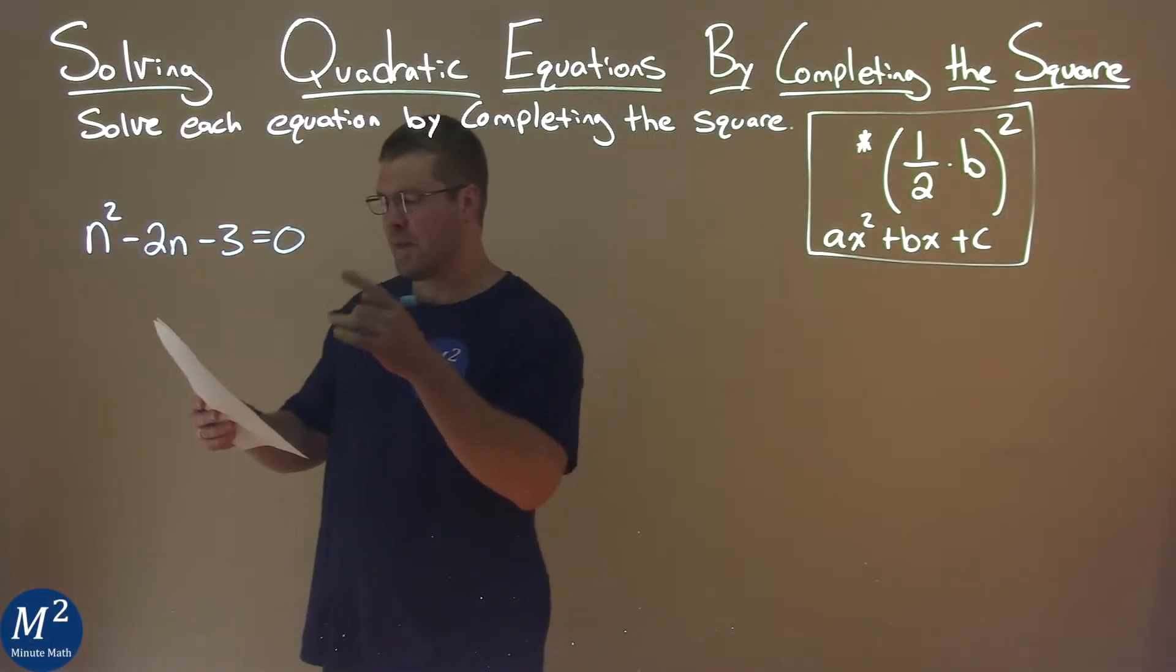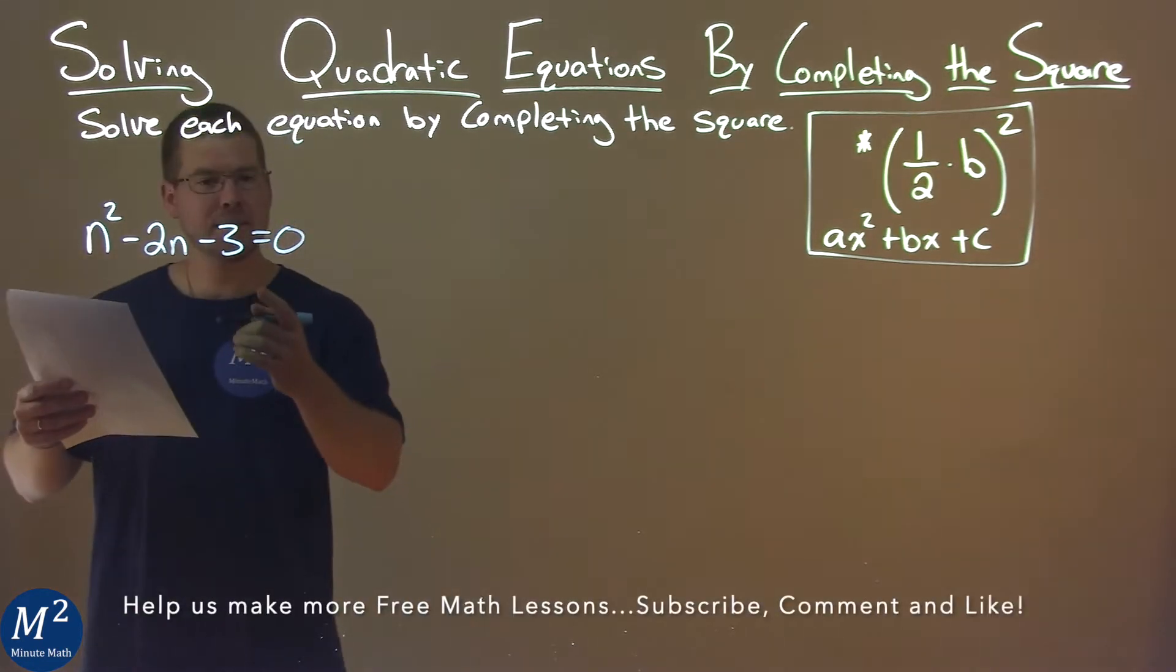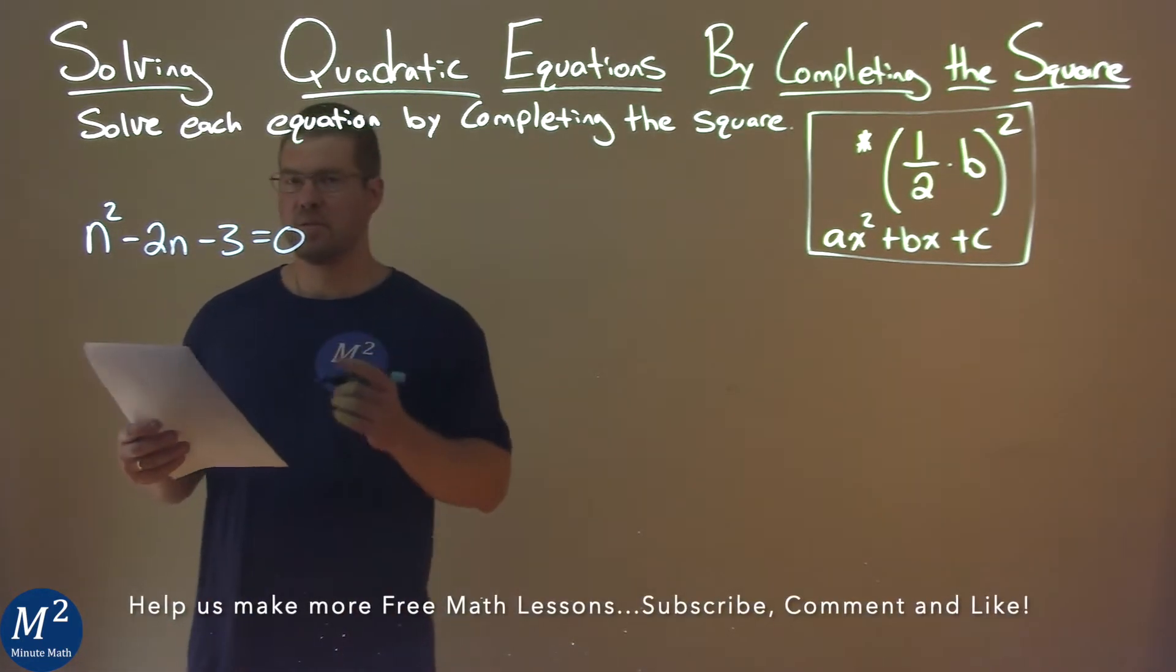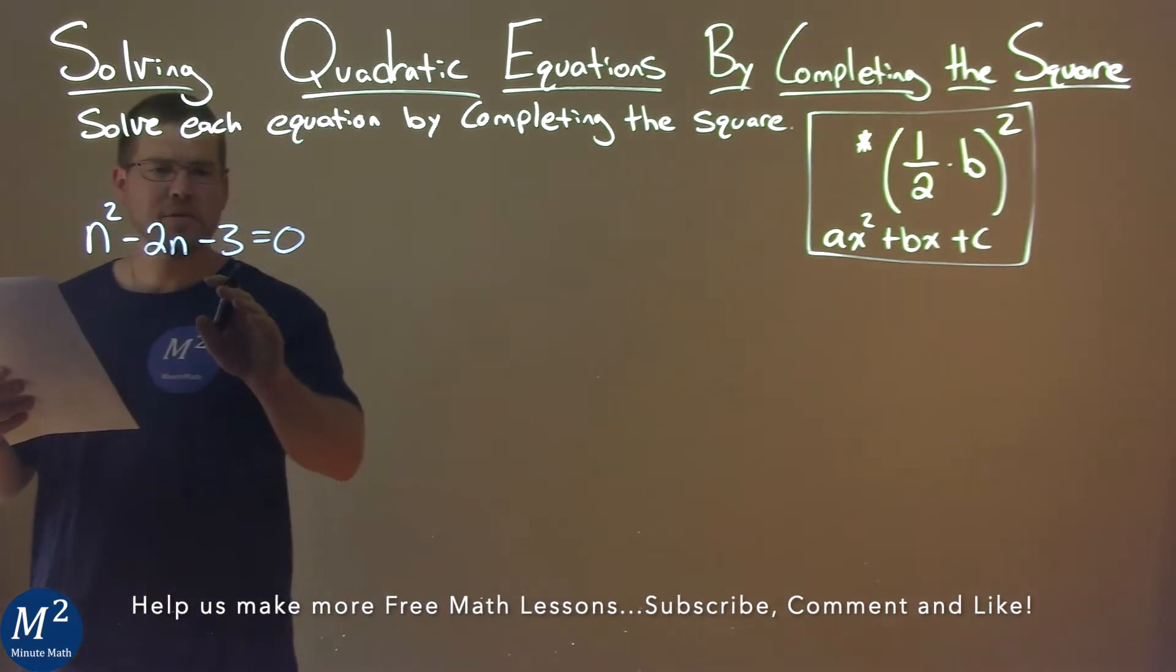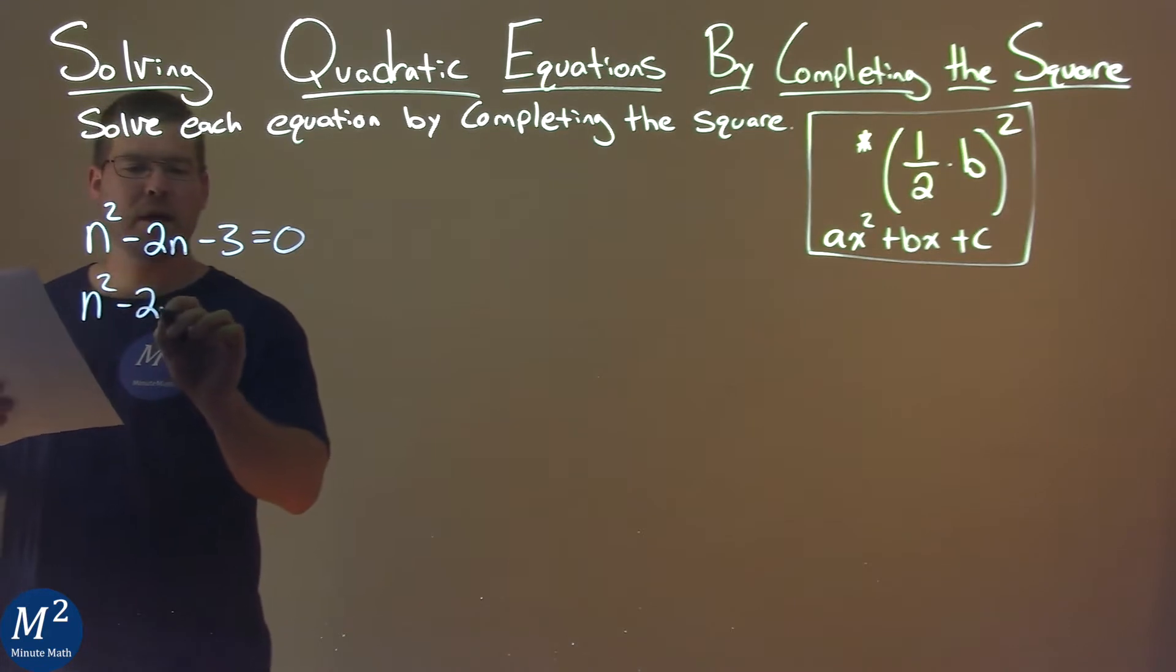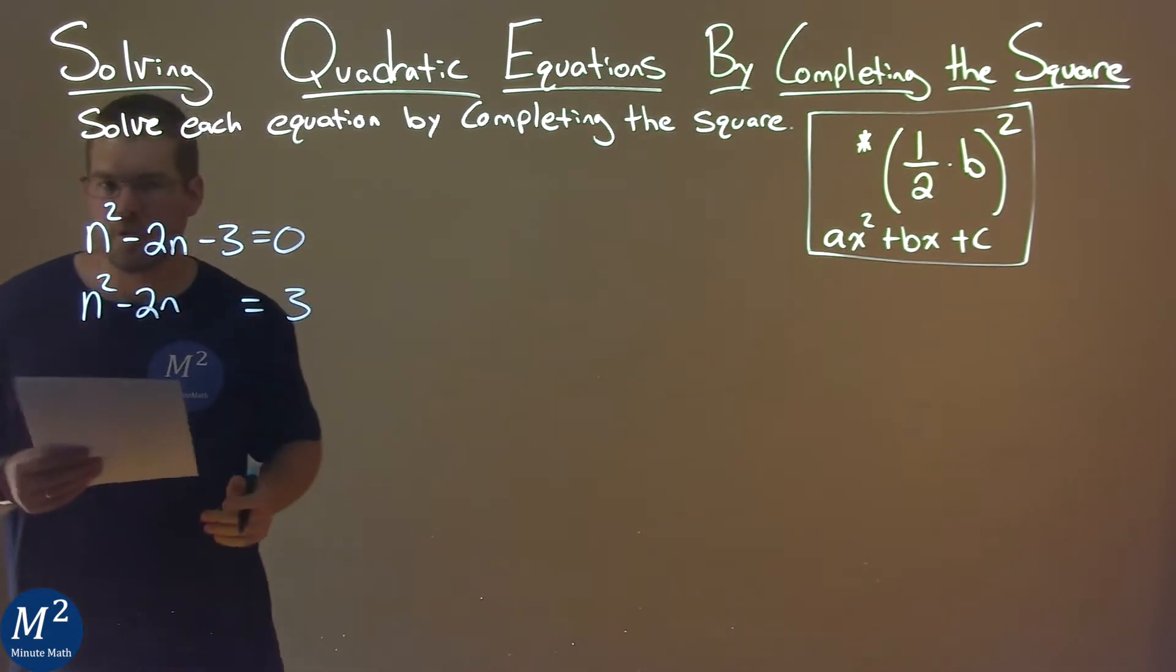We're given this problem: n² - 2n - 3 = 0, and we want to solve this by completing the square. The first thing I'm going to do is add 3 to both sides. n² - 2n = 3.